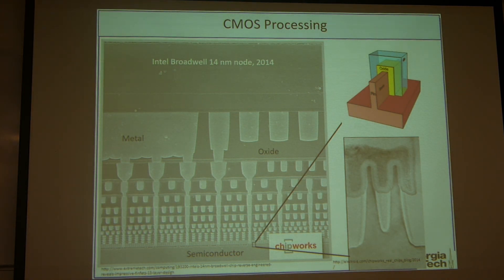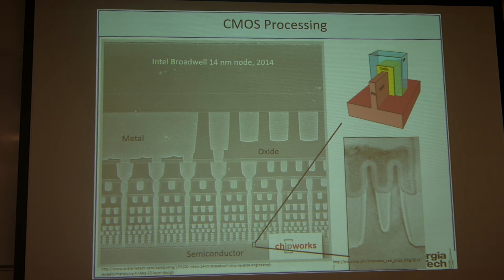As I mentioned, this MOSFET device is a basis for not only analog circuits but also digital circuits as well. This transistor size is kind of a reference number for the industry. This is a photo taken from Intel in 2014 for the 14 nanometer node of the transistor.